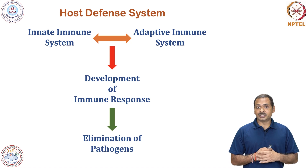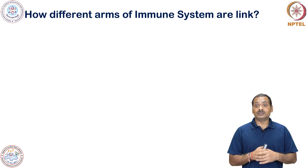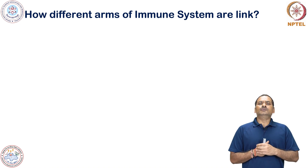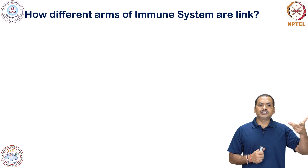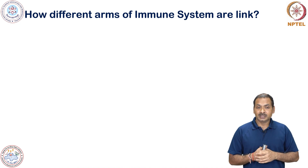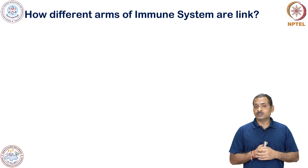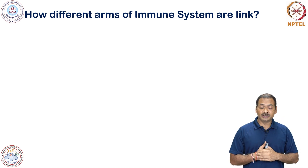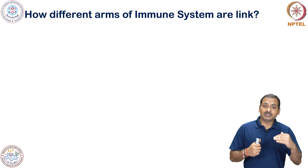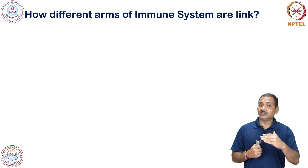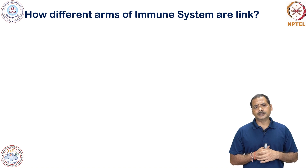Let us look at how these two different arms of the immune system are linked. In the innate immune system, there are two major components: the humoral component and the cellular component. In the humoral component, a variety of antimicrobial peptides are present, playing an important role in the elimination of the pathogen. Among these proteins, one very important family is what we call complement.